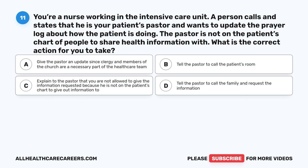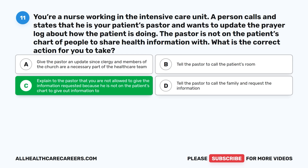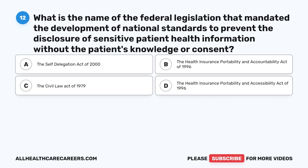Question eleven: You're a nurse working in the intensive care unit. A person calls stating he is your patient's pastor and wants to update the prayer log. The pastor is not on the patient's chart of people to share health information with. What is the correct action? A. Give the pastor an update since clergy are part of the health care team. B. Tell the pastor to call the patient's room. C. Explain to the pastor that you are not allowed to give the information requested because he is not on the patient's chart. D. Tell the pastor to call the family. The correct answer is C. The pastor is not on the patient's list of persons to share PHI with; therefore, the nurse must kindly explain that and not give out the PHI.